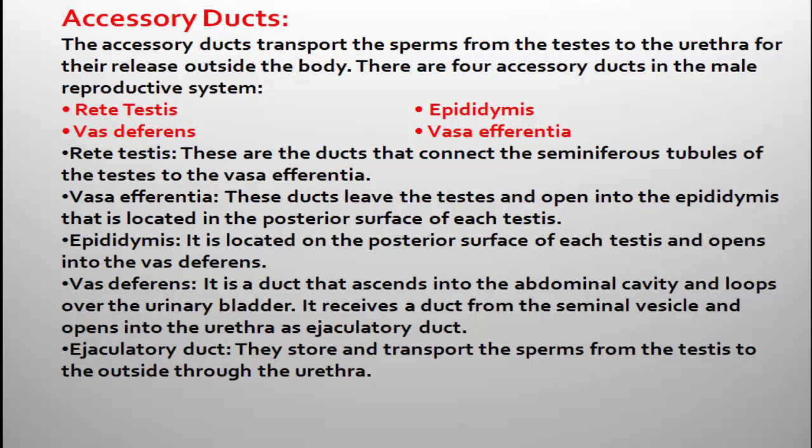There are four accessory ducts in the male reproductive system. They are: first, rete testes; second, vasa efferentia; third, epididymis; and fourth, vas deferens. The vas deferens continues further as the ejaculatory duct. Let us now look at the functions of each of these accessory ducts.